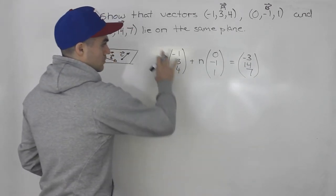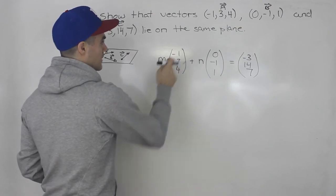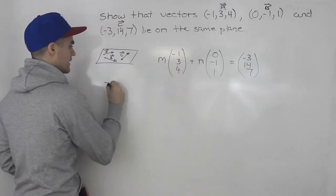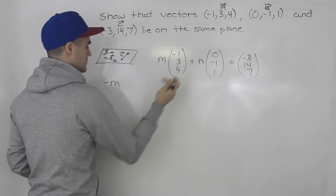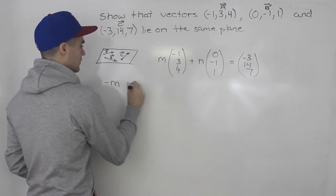So now we have this set up, we can make three equations. So m times -1, that is -m, n times 0 is just 0, and then this has to equal -3.